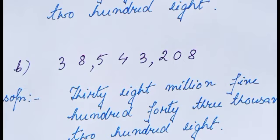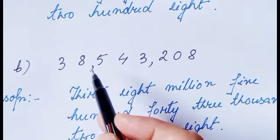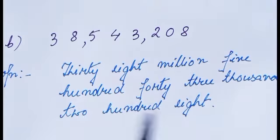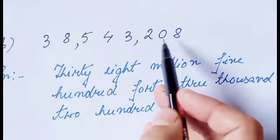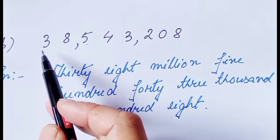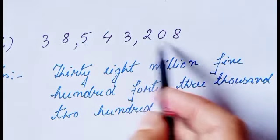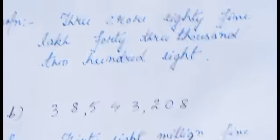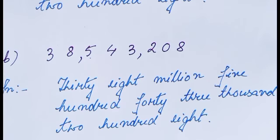For the same number written differently: the first comma comes after three digits, and the second comma also comes after three digits — so this is the international system. Checking place values: ones, tens, hundreds, thousands, ten thousands, hundred thousands, one million, ten million. The number name is: thirty-eight million, five hundred forty-three thousand, two hundred and eight. That is how we write number names according to both the Indian and international systems.